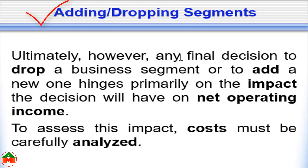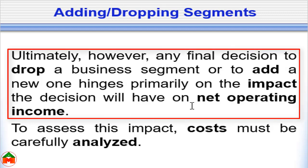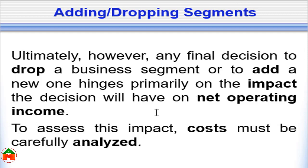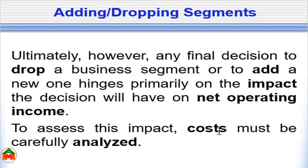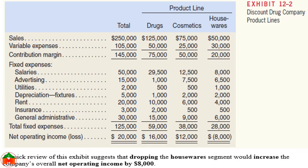Whenever we need to take decisions regarding adding and dropping a product line or segment, we ultimately need to decide what the net operating income would be if we add or drop that product or segment. We have to analyze the costs related to adding or dropping that product, and consider the relevant costs and benefits regarding that product line or segment.